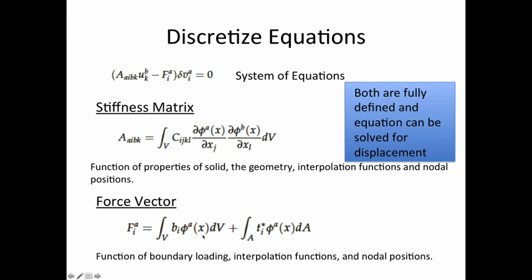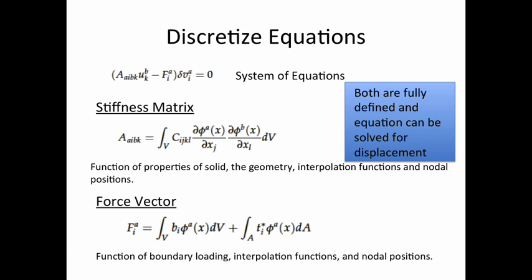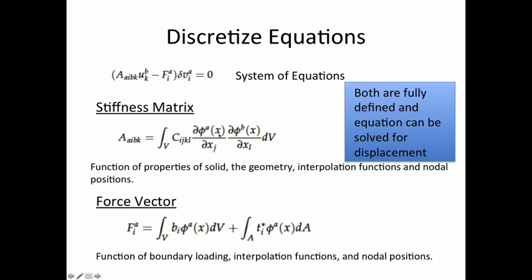The force vector is a function of boundary loading, interpolation functions, and nodal positions. B_phi_A represents body forces - for this problem it will be zero, but I left it in the program so I can add body forces later. The traction term is applied based on what your load is. With both the stiffness matrix and force vector fully defined, we should be able to solve the system of equations for displacement. We still need to select the basis function.